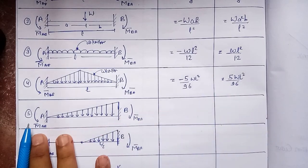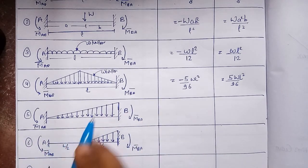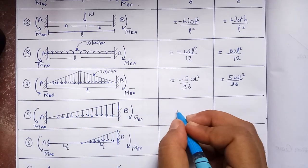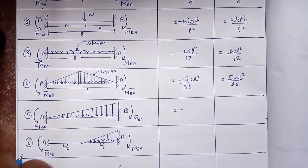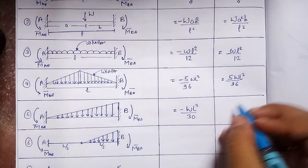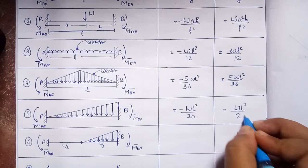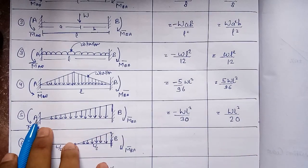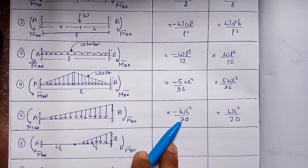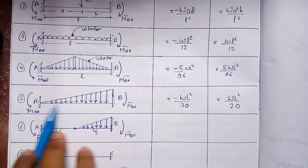The fifth case is when a uniformly varying and uniformly increasing load is applied over the entire span L of a fixed beam. The fixed end moment at joint A is M-bar_AB = −wL²/30 (negative, anti-clockwise). The fixed end moment at joint B is M-bar_BA = +wL²/20 (positive, clockwise). These values differ because the varying load is not symmetric, so the moment at A is less and at B is more.